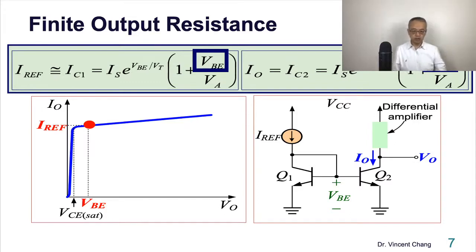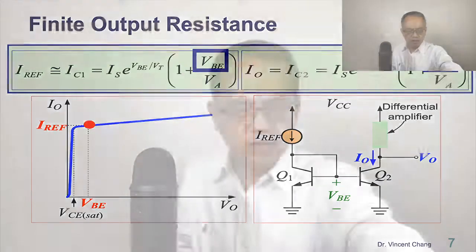However, if you have a different VO, which is most likely you have any type of VO, then IO will not be equal to I reference. Which means this current mirror is not great, because you claim you are a constant current mirror, a constant current source.